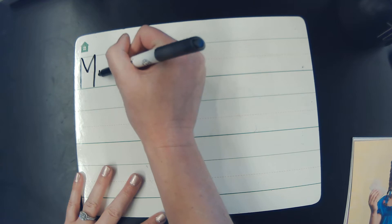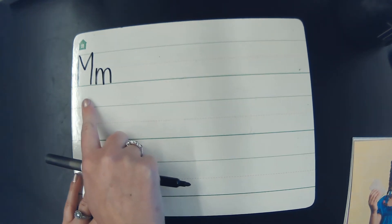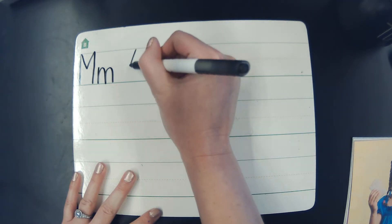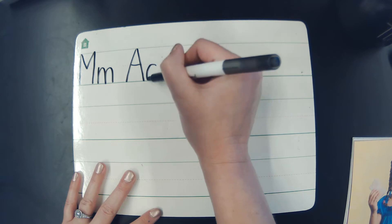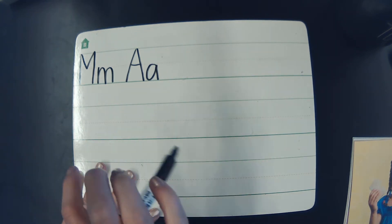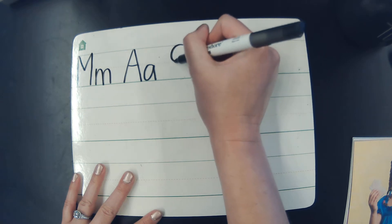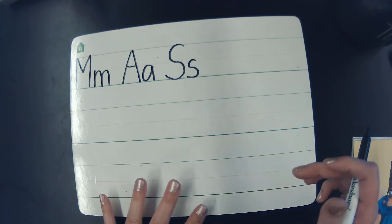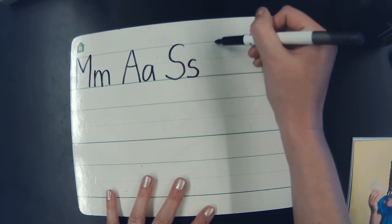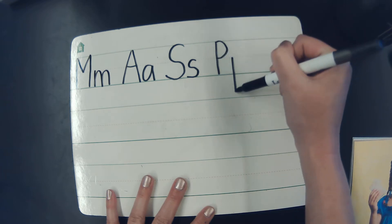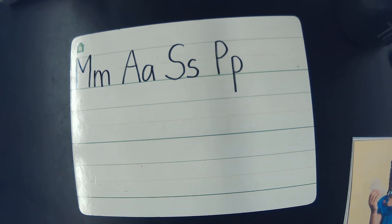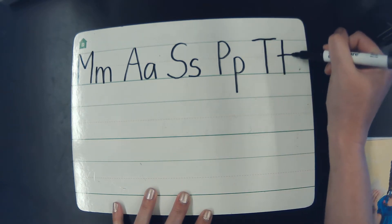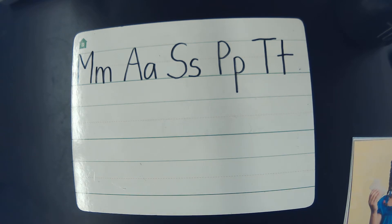The M says mmm. Every letter makes a sound. The M says mmm. The A says ah. Every letter makes a sound. The A says ah. The S says sss. Every letter makes a sound. The S says sss. The P says p. Every letter makes a sound. The P says p. The T says T. Every letter makes a sound. The T says T.